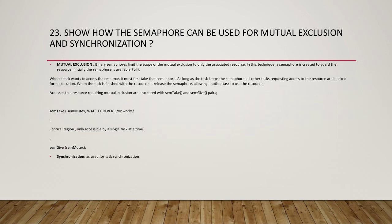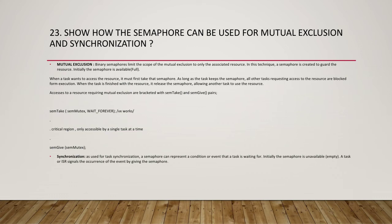For task synchronization, a semaphore can represent a condition or event that a task is waiting for. Initially the semaphore is unavailable — empty. A task or ISR signals the occurrence of the event by giving the semaphore. When used for mutual exclusion, the semaphore is initially full and each task first takes then gives back the semaphore. For synchronization, the semaphore is initially empty and one task waits to take the semaphore given by another task.